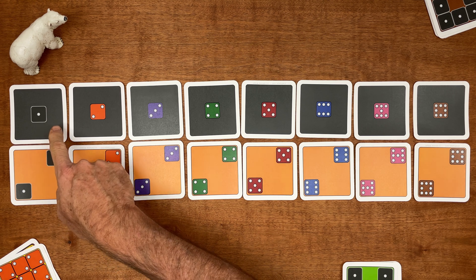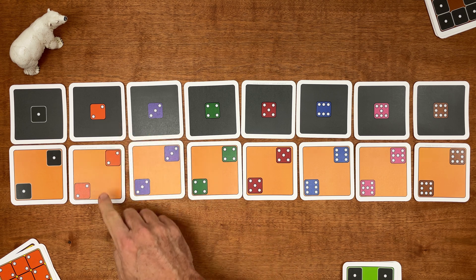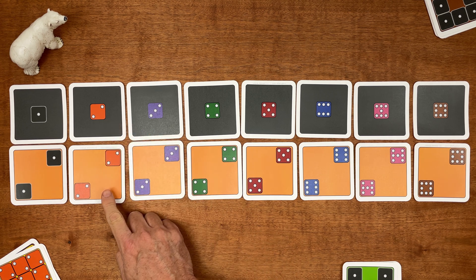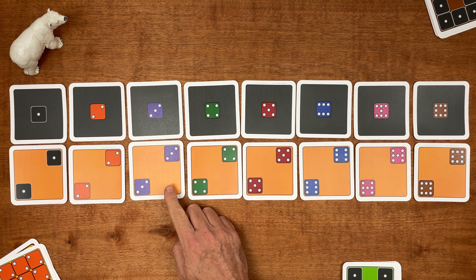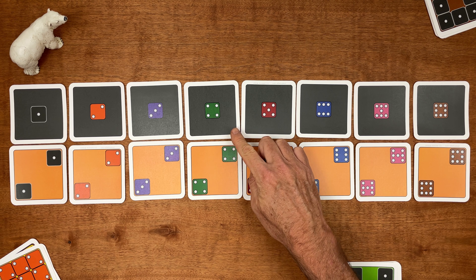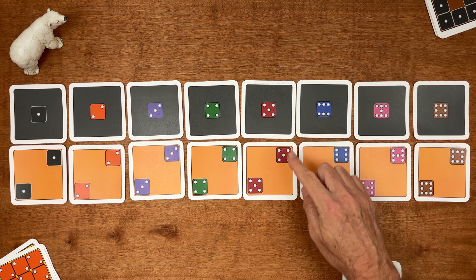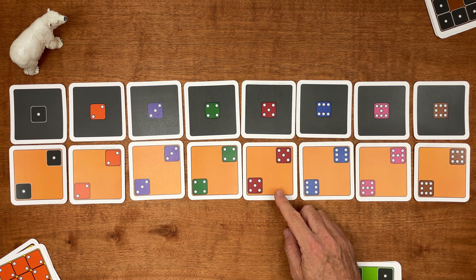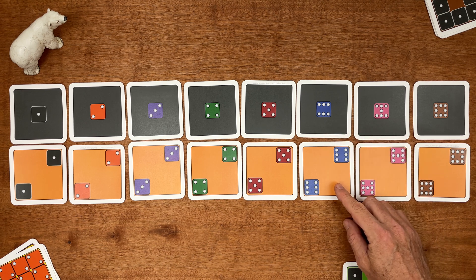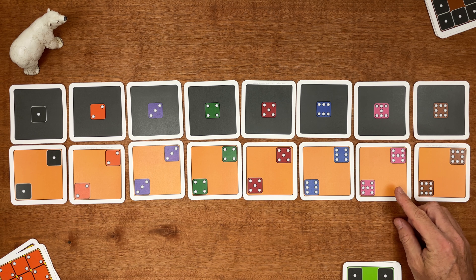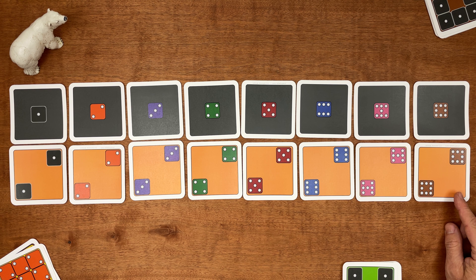One one is one, two ones is two. One two is two, two twos is four. One three is three, two threes is six. One four is four, two fours is eight. One five is five, two fives is ten. You knew that. One six is six, and two sixes is twelve. One seven is seven, two sevens is fourteen. One eight is eight, and two eights is sixteen.